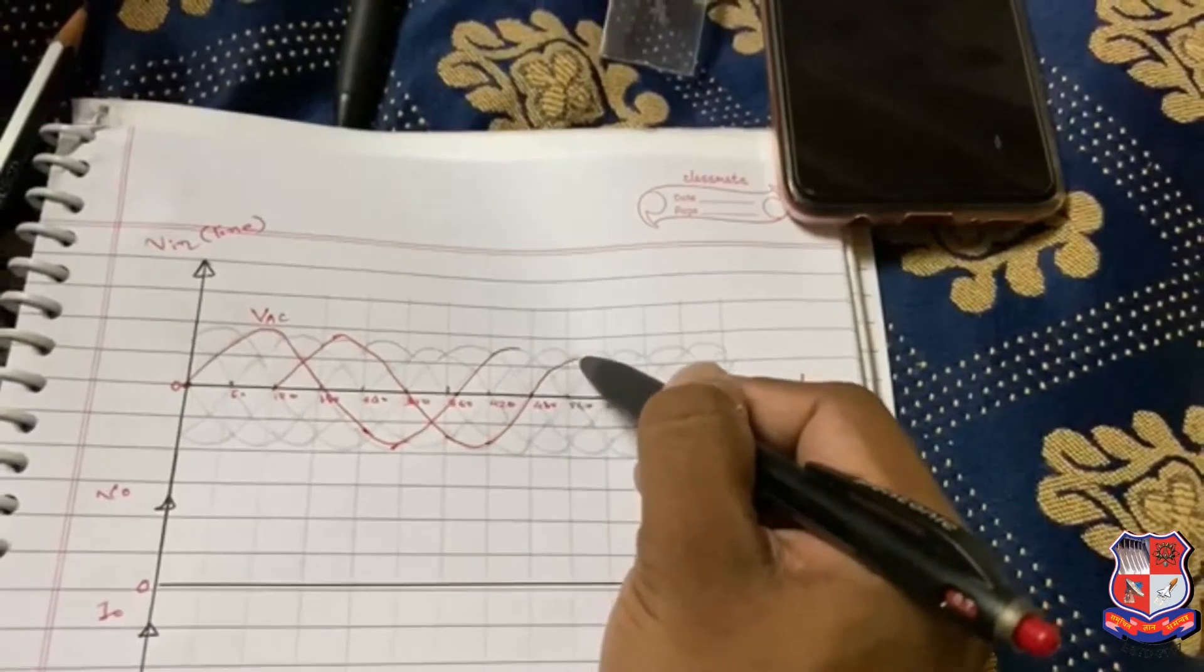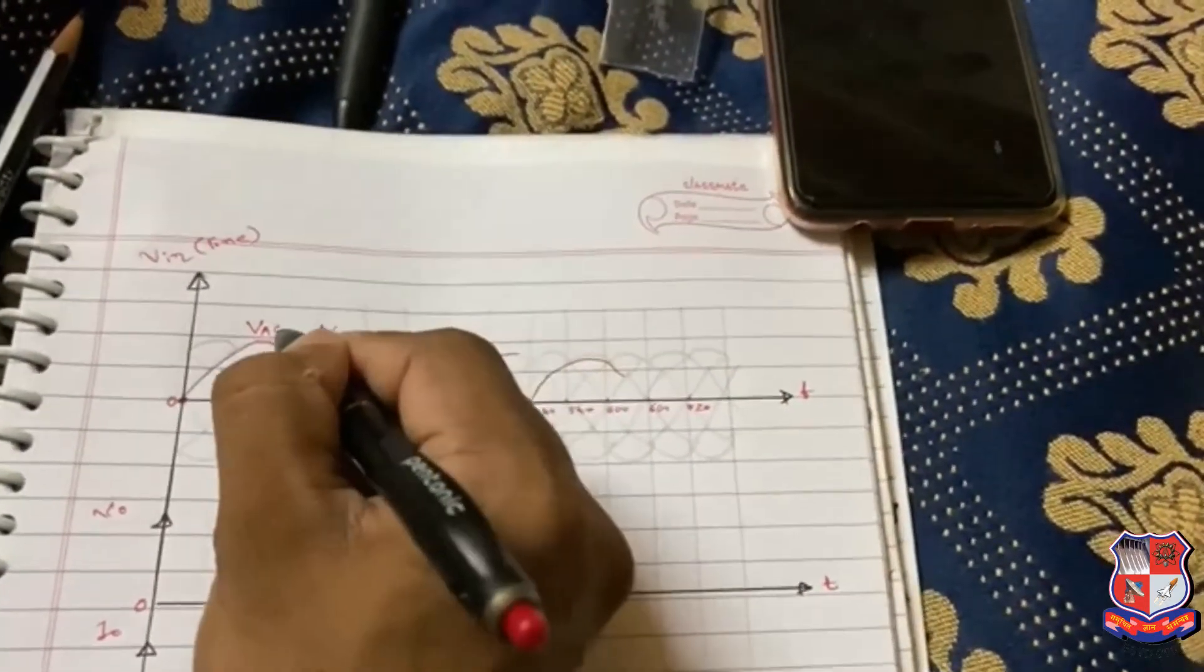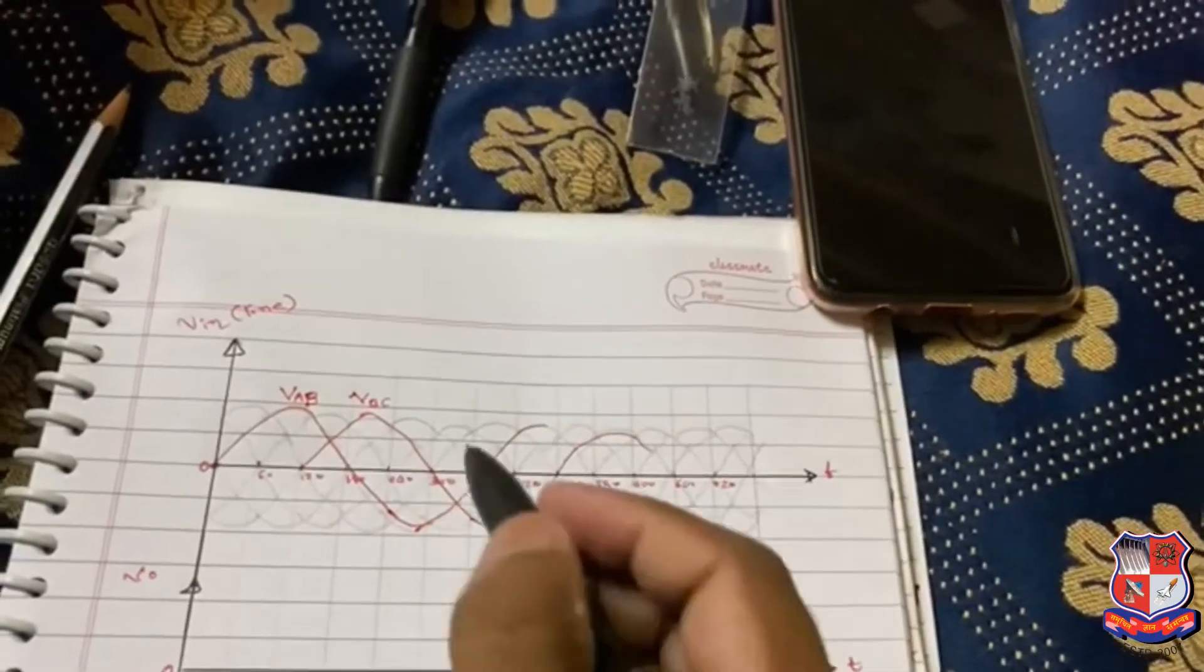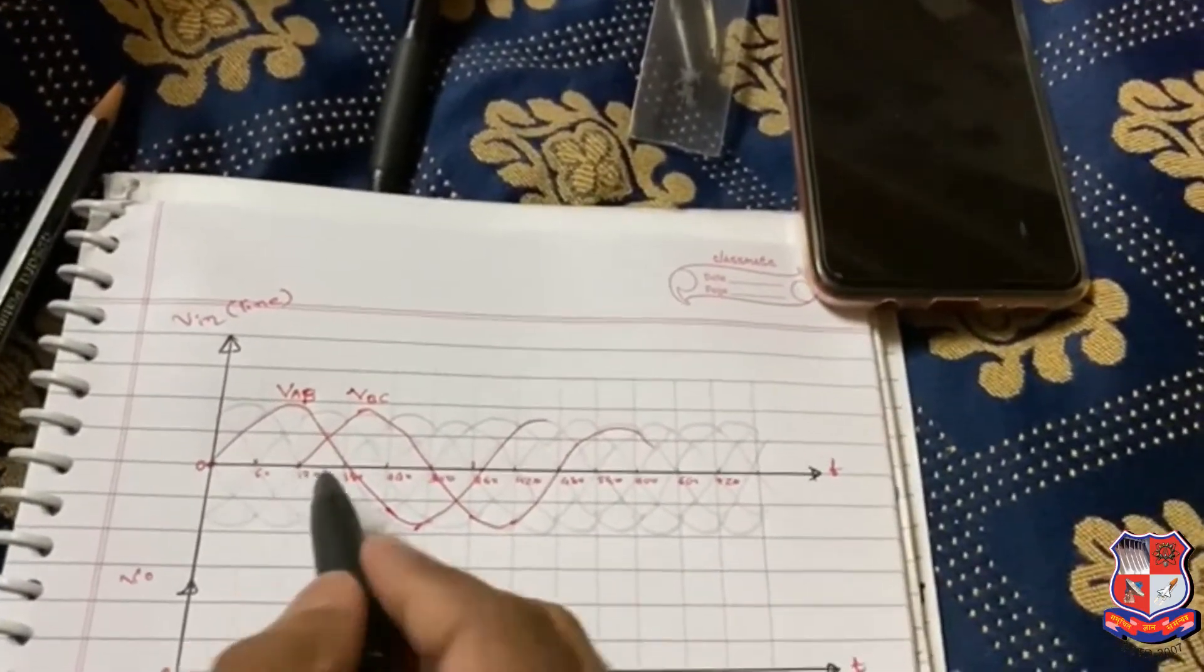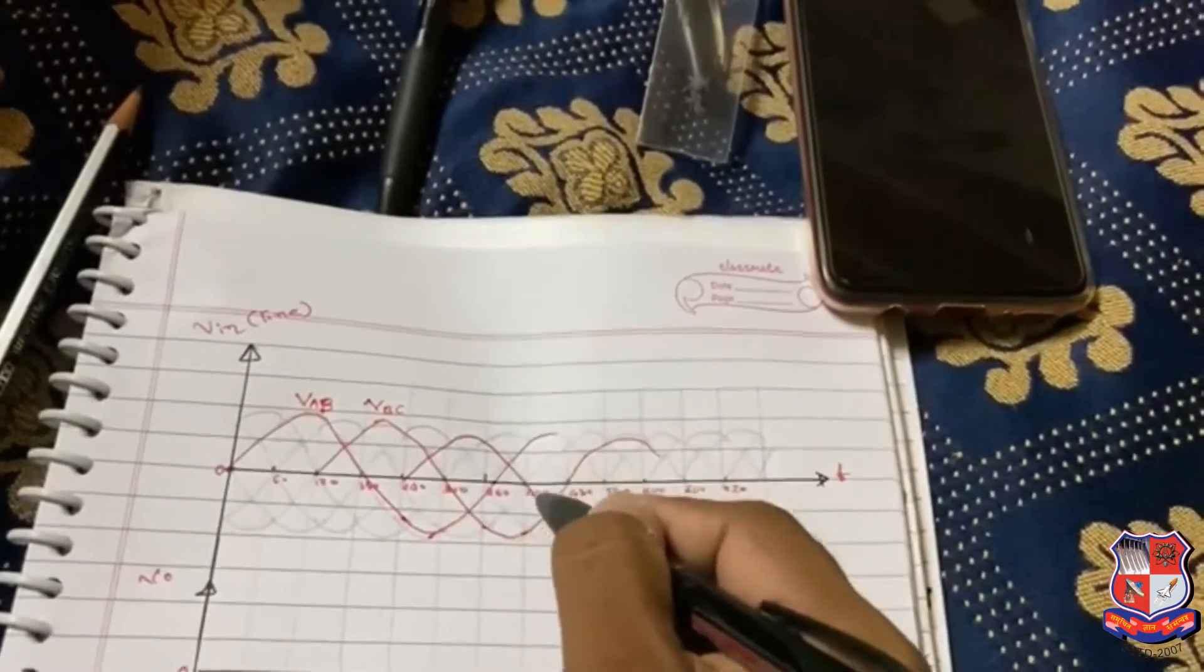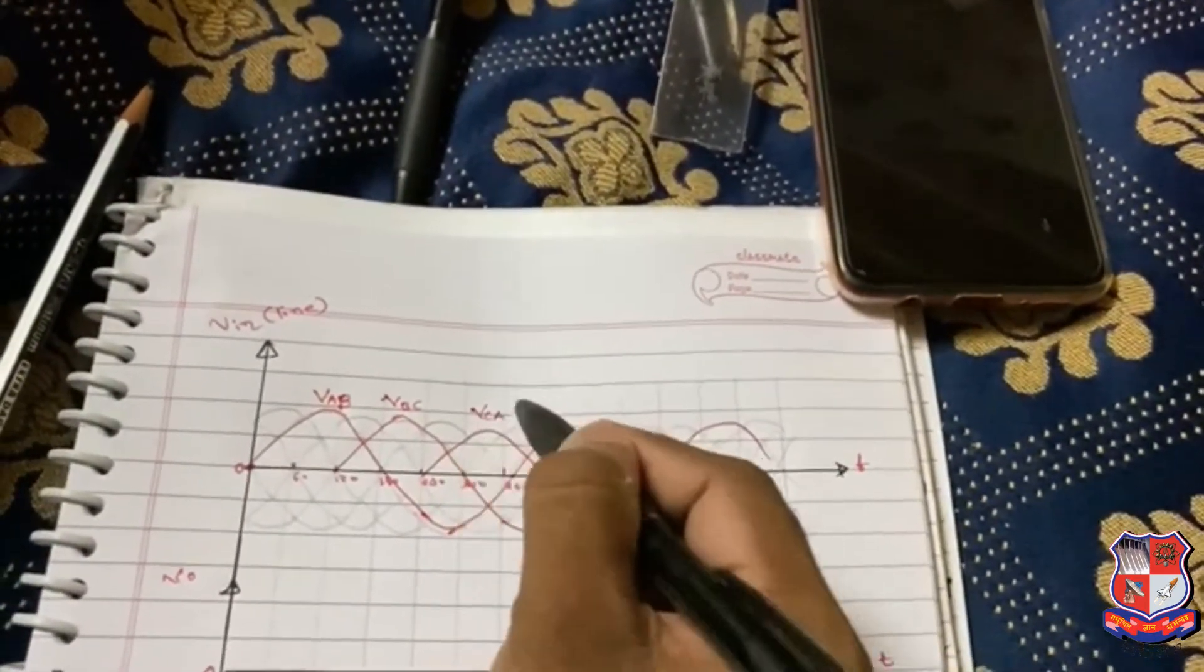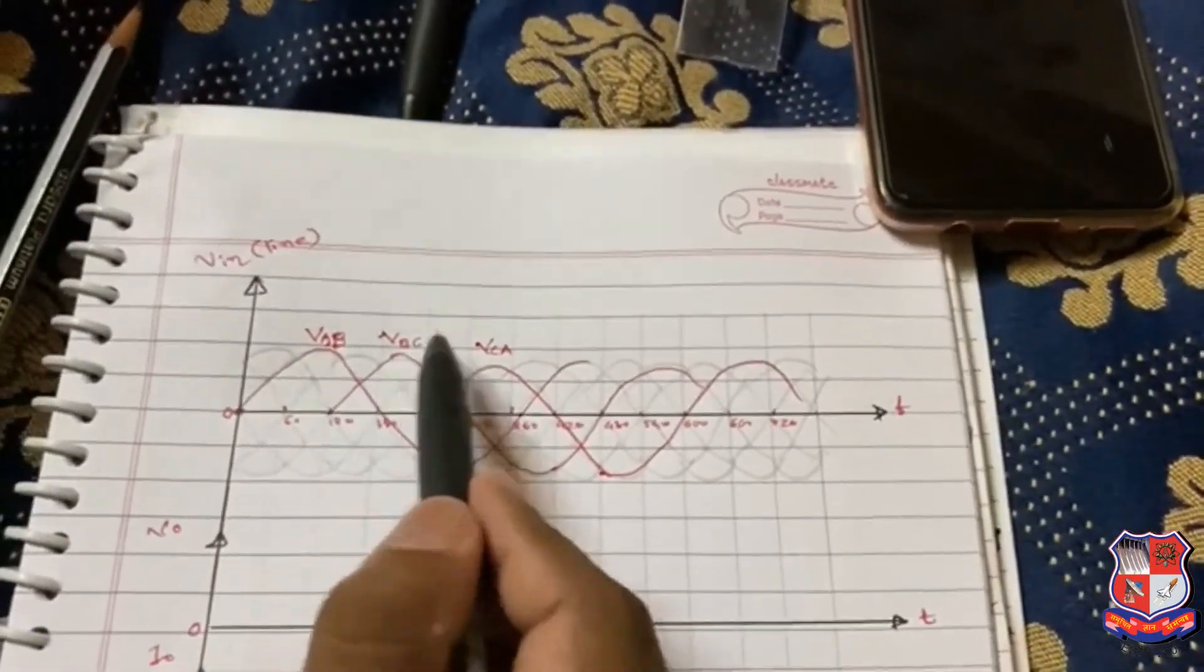Now we know that after 120 degrees, the voltage will be there and it is called VAB. This is VAB, this is VBC, and at 240 degrees the voltage VAC will be there. This is the sequence: VAB, VBC, VCA.